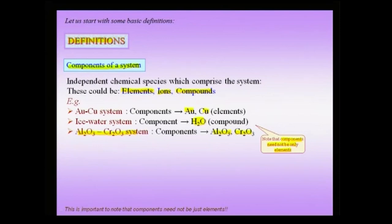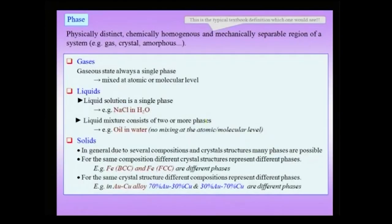You could draw a phase diagram — for instance a unary phase diagram — for water, in which case the component is water, which is a compound. Typically you would encounter the term phase in textbooks as defined to be something which is physically distinct, chemically homogeneous, and mechanically separable region of a system — like a gas phase, a crystalline phase, or an amorphous phase. This is the typical textbook definition, but we will use more viewpoints to understand the concept of a phase in the coming slides.